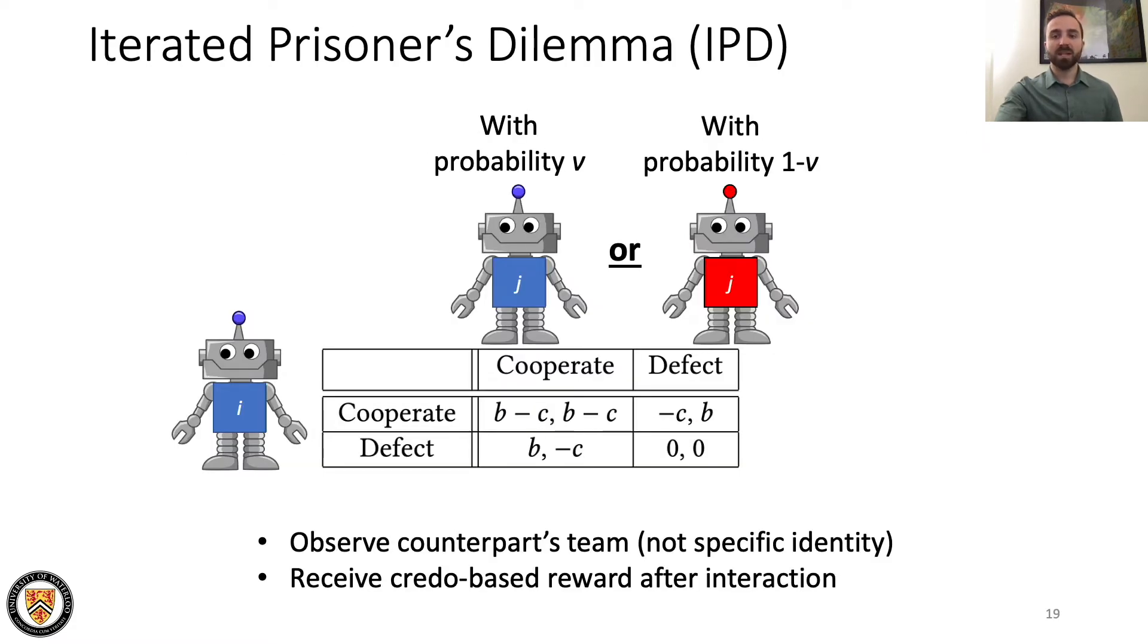In the IPD, agents are paired to play a single round of the prisoner's dilemma game according to this payoff matrix. We vary the cost of cooperation and the probability that an agent's counterpart is a teammate. Agents observe their counterpart's team and receive their credo-based reward after their interaction.